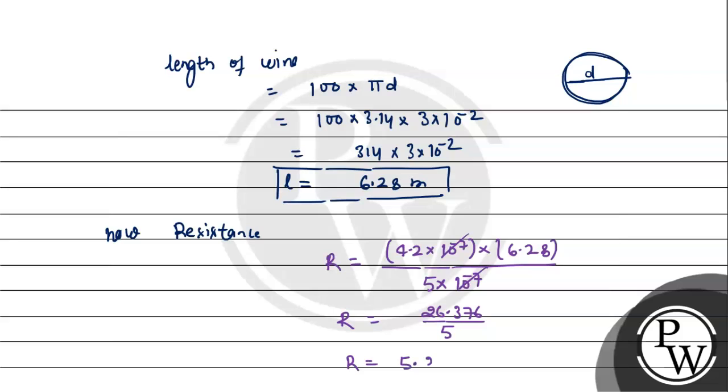That equals 5.27 ohms. So the resistance we get is 5.27 ohms. That's the answer.